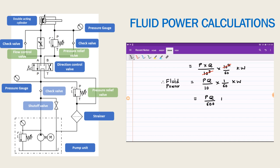We can directly use this formula for the calculation of fluid power when pressure is expressed in bar and q is given in liters per minute: fluid power equals p times q divided by 600 kilowatt.